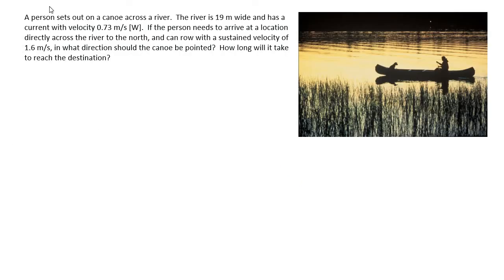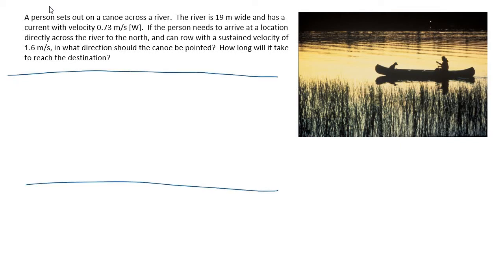Let's do one more example in the context of a river with a current, which also involves kinematics. A person sets out in a canoe across a river that is 19 meters wide with a current of 0.73 meters per second west. If the person needs to arrive directly across the river to the north and can row at 1.6 meters per second, we start with a diagram. We define up as north, and mark the river as 19 meters wide.